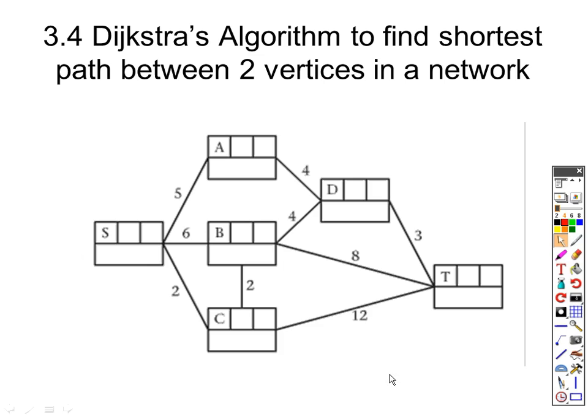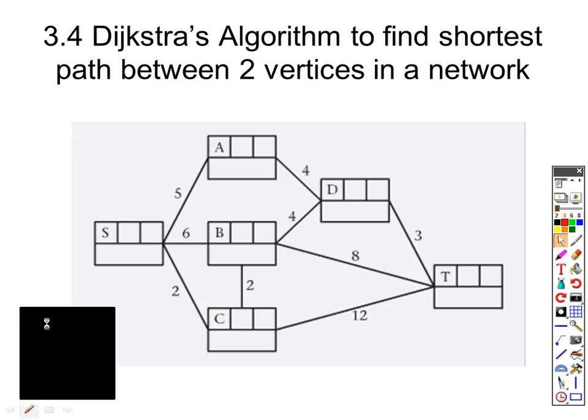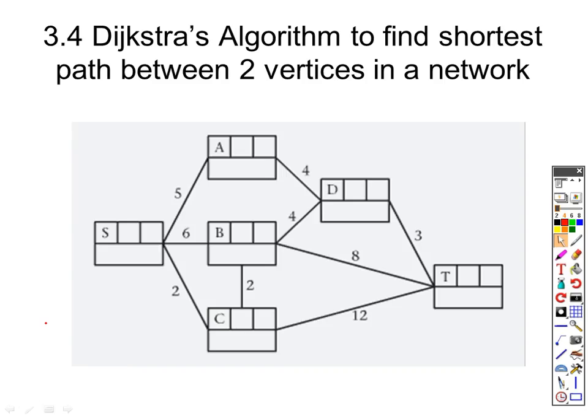Here's the format they will use in the exam. We want to start at s and get to t. We're starting at s, so I'm going to put a 1 in this middle box, because this middle box tells us which part of the journey it is. If we're starting at s then the journey is taking a distance of 0, so we'll put a 0 in there.